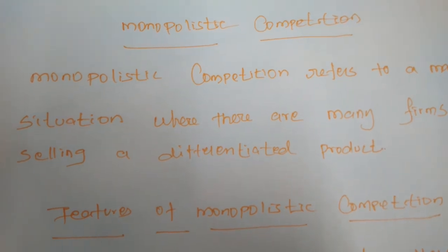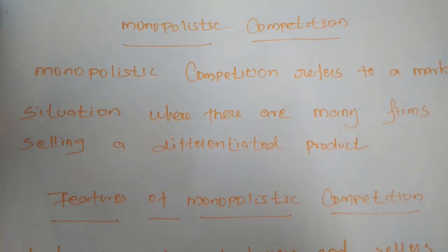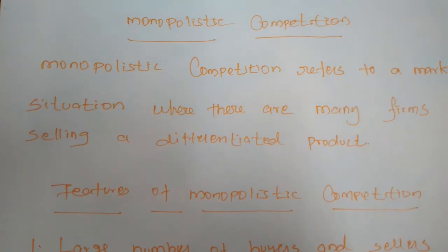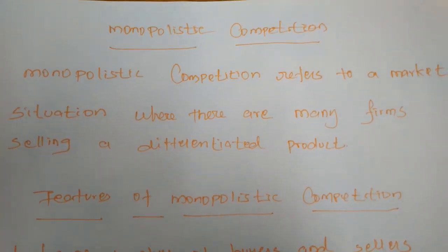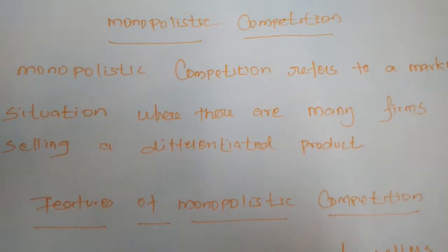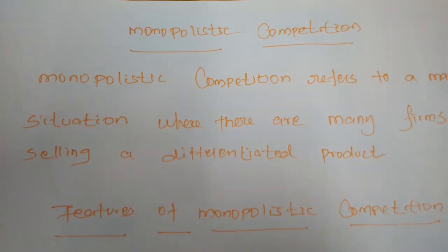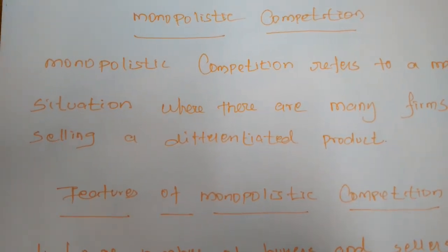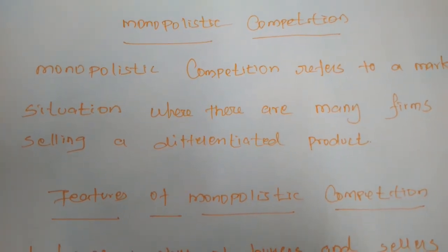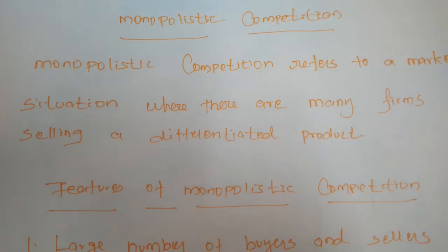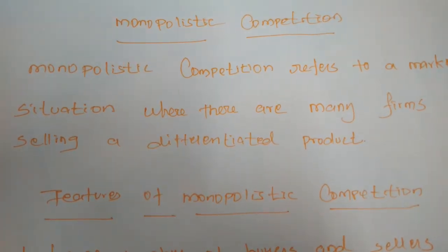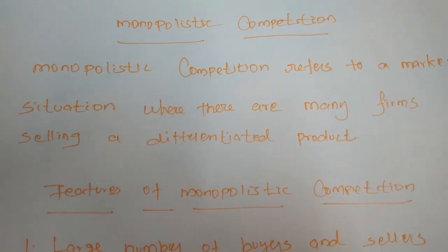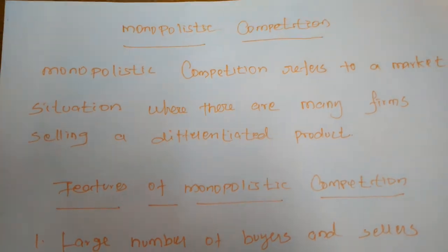Next, in imperfect competition, another type of market is monopolistic competition. Monopolistic competition refers to a market situation where there are many firms selling a differentiated product. For example, the same type of commodity is produced by different firms — soap, shampoo, and toothpaste are all best examples. Colgate, Dabur, Pepsodent, and different types of companies are there, making slight changes to their products to enter the market.